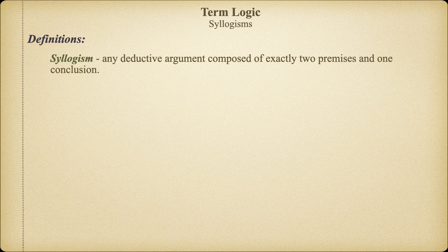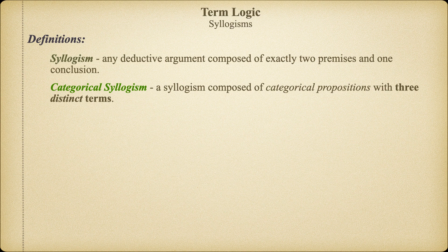If we were to build a syllogism using categorical propositions, we would have a categorical syllogism. It's important to note that since each categorical proposition has two distinct terms—a subject term and a predicate term—a categorical syllogism, which is composed of three different categorical propositions, will require us to have a total of three distinct terms. It's these three distinct terms which will be the essential components of the inferential magic that makes a categorical syllogism valid.